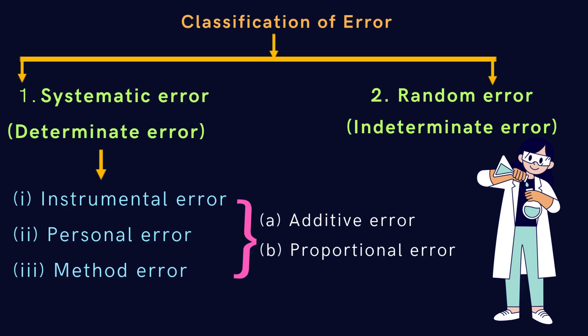These are further divided into instrumental errors, personal errors, and method errors. The nature of these types of systematic errors can be either additive or proportional. We'll discuss each of these error types in detail later on.